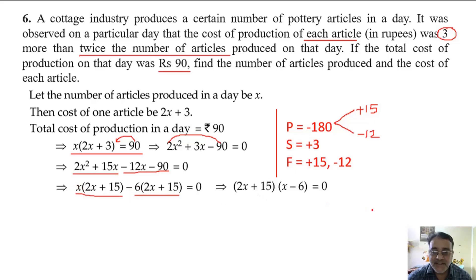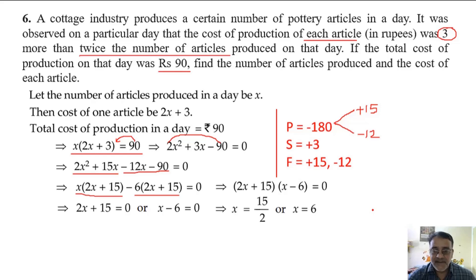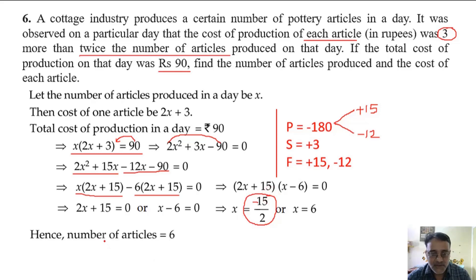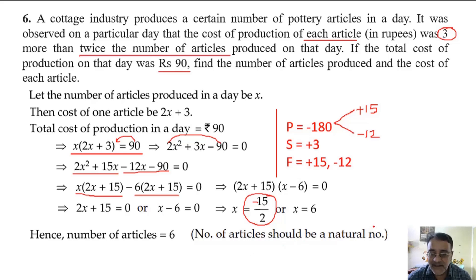The final answer gives x equal to 6 or x equal to minus 15 by 2. Since x represents the number of articles, it must be a natural number, so we reject minus 15 by 2. Hence the number of articles is equal to 6.